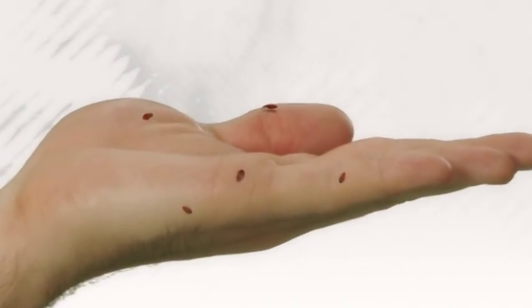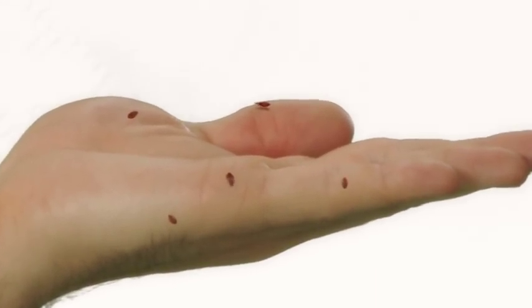Tiny, lentil-sized vampires that prefer to only come out at night. And that's why so many people don't even know they have them until it's a full-fledged infestation.